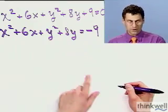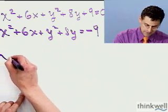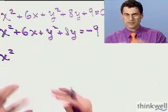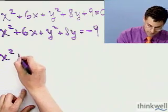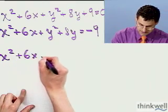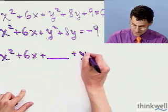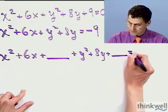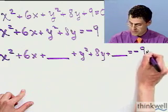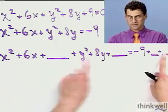Now I write the whole thing out again, but I'm going to put some spaces here. Completing the square means I have a piece of a square and I'm going to add something else to make it a perfect square. So I have x squared plus 6x plus blank, then y squared plus 8y plus blank, equals minus 9 plus blank plus blank — because if I add something to one side I have to add to the other side.